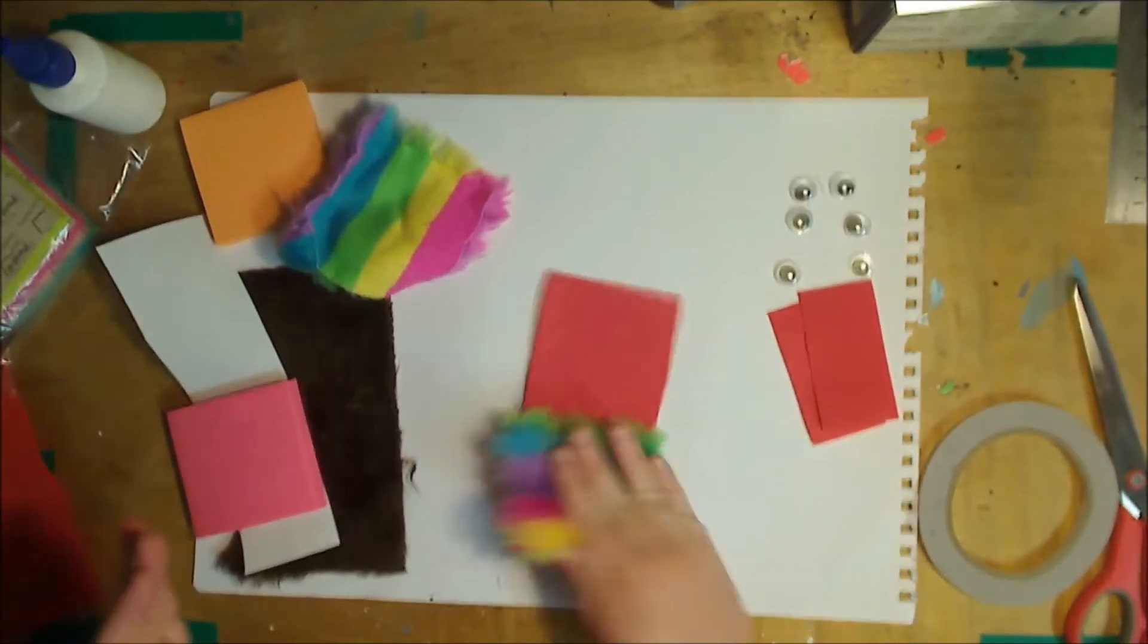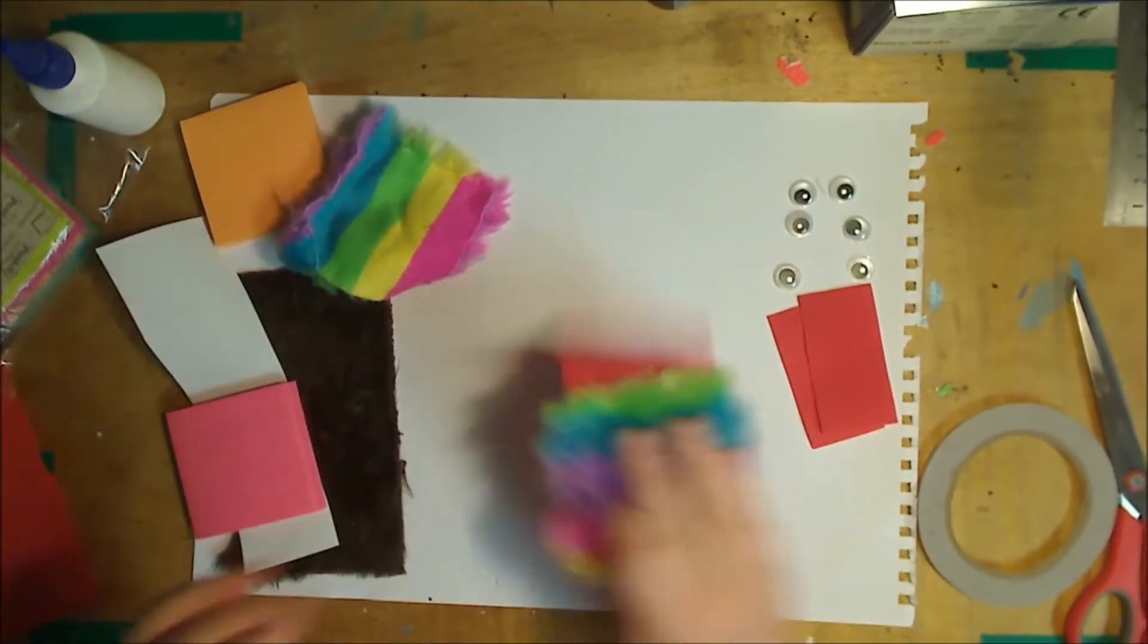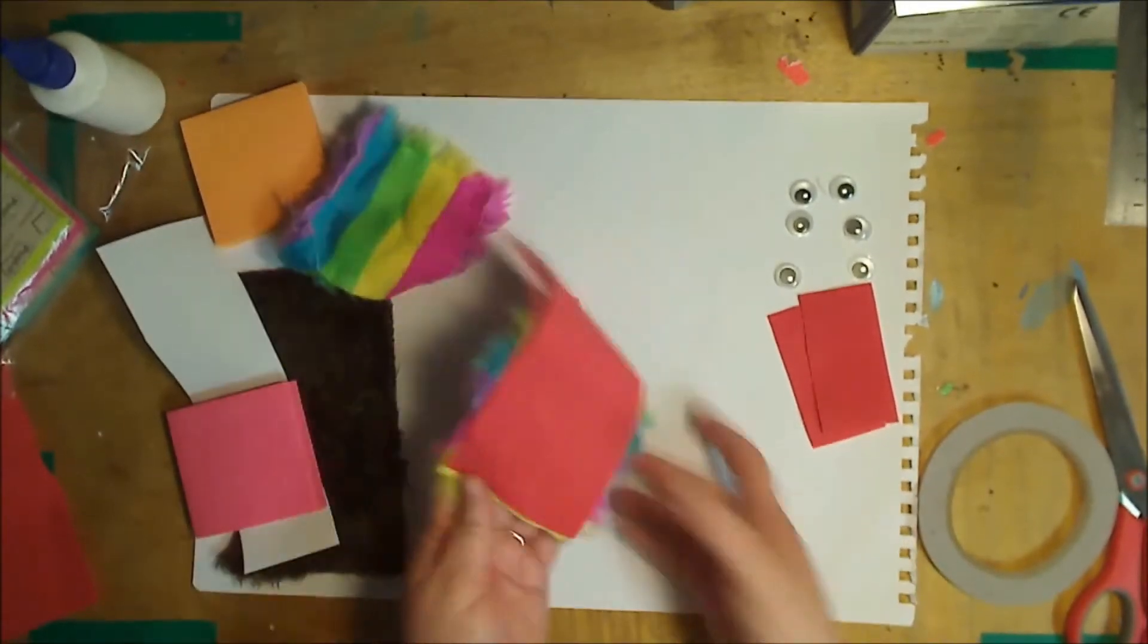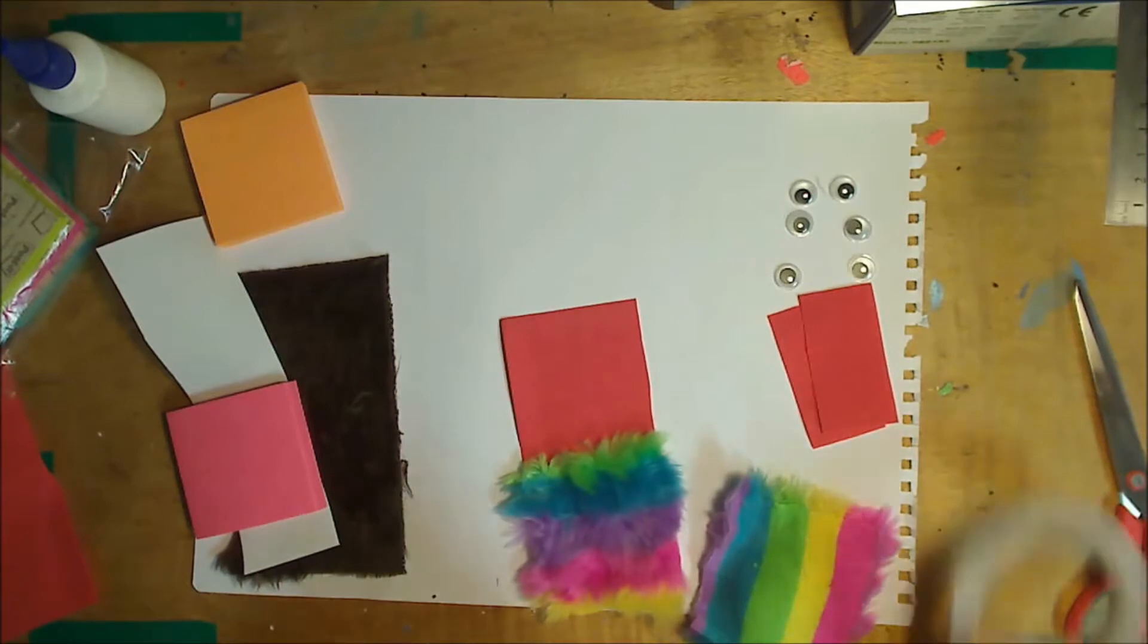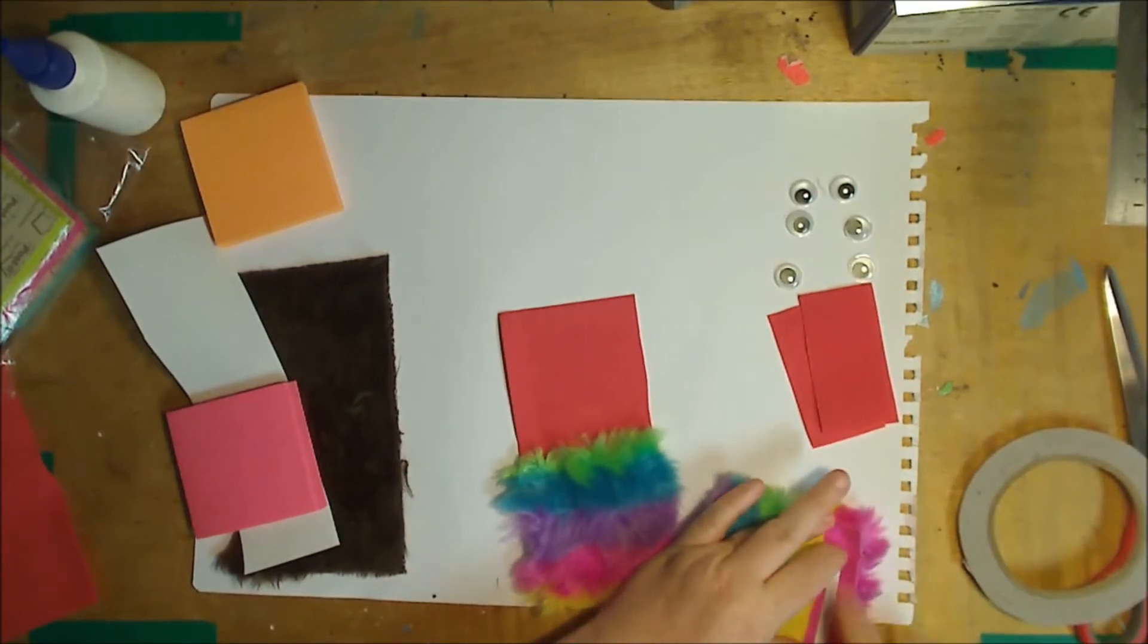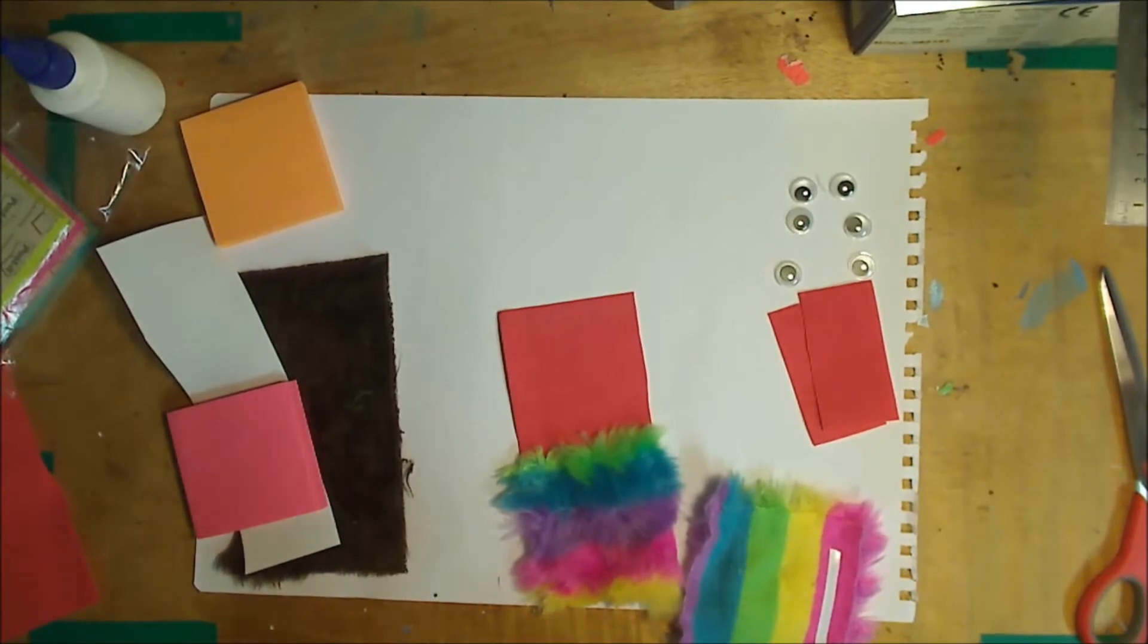You want your fur to come over the outside of your foam. So when you flip it over, you want to be able to see the fur. Now these ones, the rainbow one and the brown one, are just made with offcuts from a larger project.